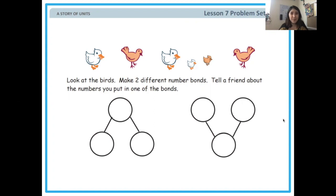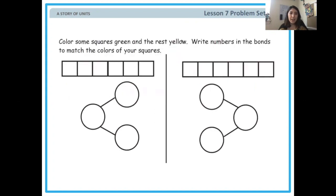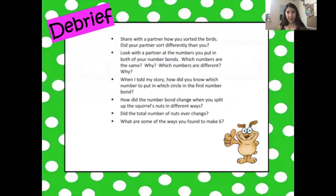Here. You're going to color some of the squares green and the rest yellow. I want two different number bonds right here. We know how to do this. And that's it for today, guys.